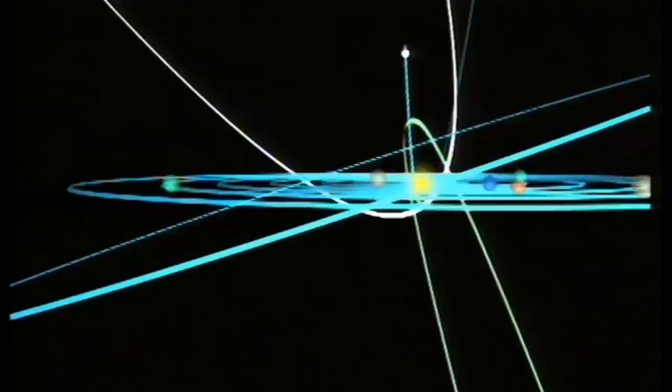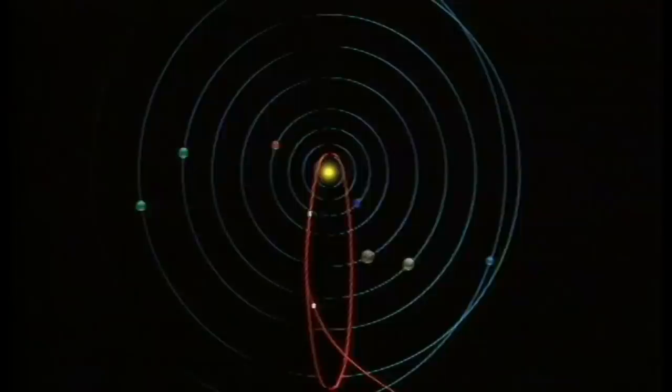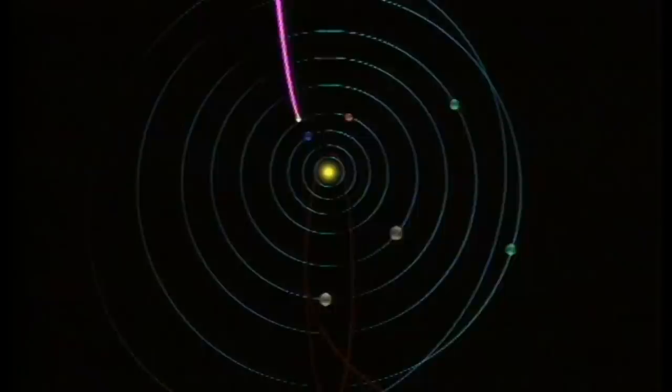Les comètes sont les vagabonds du Système Solaire. Certaines se déplacent décrivant d'hasardeuses orbites elliptiques passant à toute allure devant les planètes. Telles des kamikazes, elles plongent vers le Soleil et meurent. D'autres ne font que l'effleurer.